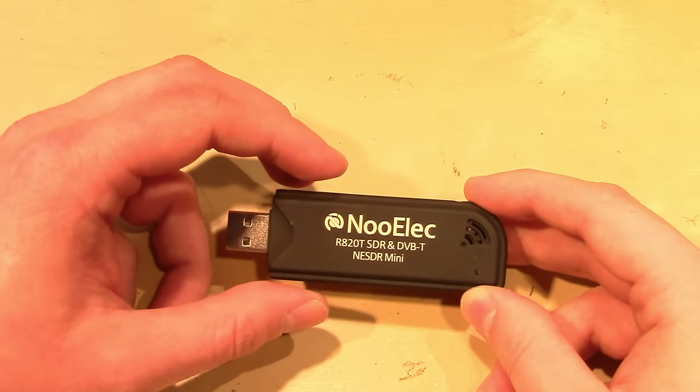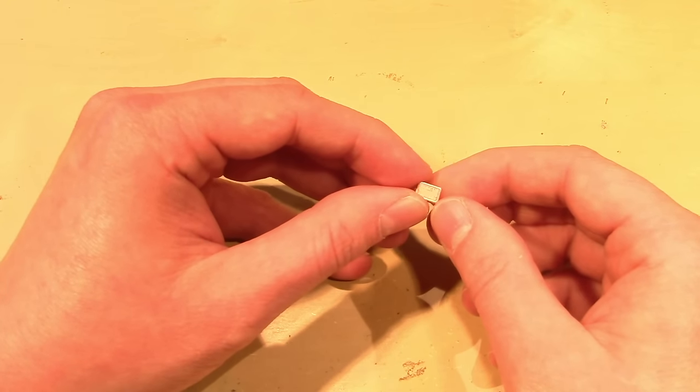RTL-SDR modules are incredibly popular due to their low cost and versatility. However, if you're doing something that requires a high degree of frequency precision, the temperature stability of the internal 28.8 MHz oscillator that comes with these things may not be sufficient for your needs. So it's very common to see people replace this with a 28.8 MHz temperature compensated oscillator module like one of these.